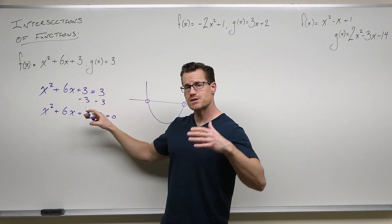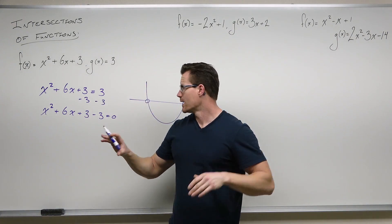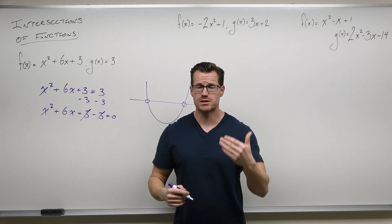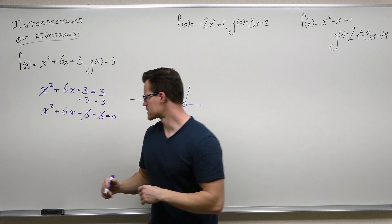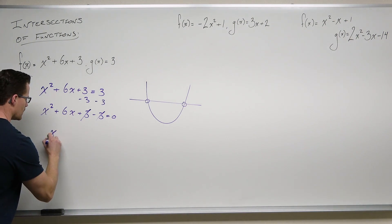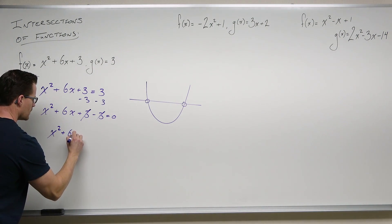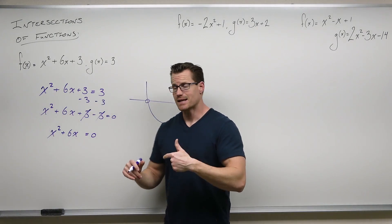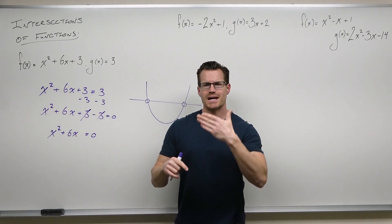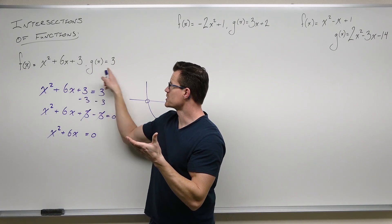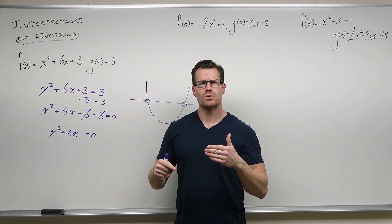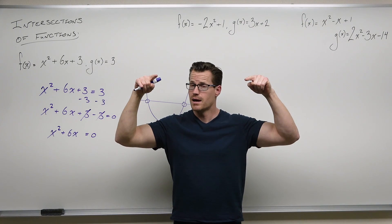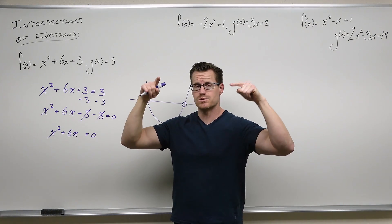If you shift this parabola down — subtract three — we'd shift it down three units. By finding the x-intercepts of this function, it's like finding the intersection of these two functions. So it's kind of difficult to think of where this parabola crosses the y equals three line, or g of x equals three.